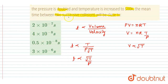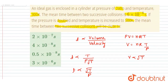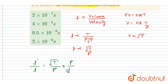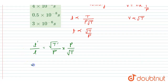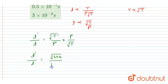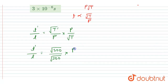The temperature is increased to 500 Kelvin and the pressure is doubled. So the ratio of new to old mean time equals under root of 500 over under root of 300, multiplied by P over 2P. This gives us under root 5 by 3 into half, i.e., under root 5 divided by 2 root 3.